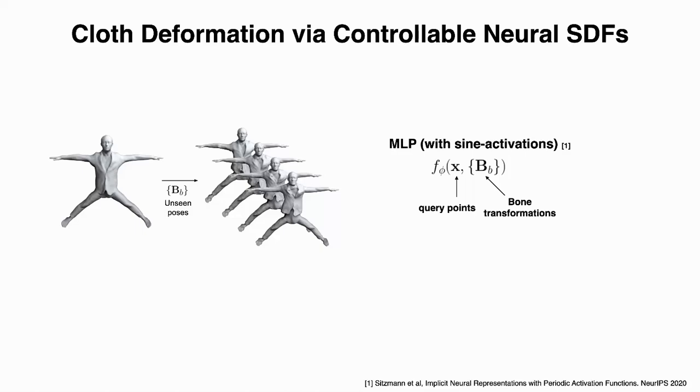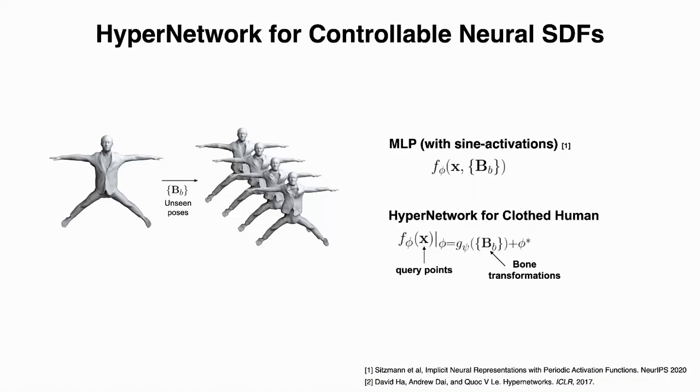x are the query points in space and B are the bone transformations represented by poses and bone lengths. We tried many different MLPs like plain MLP, MLP with positional encodings, and MLP with sine activations. MLP with sine activations works best. However, we still produce overly smooth results.